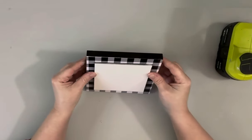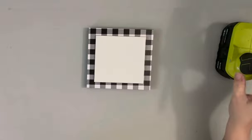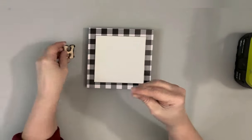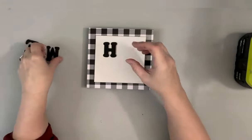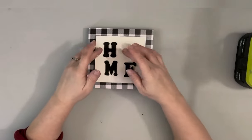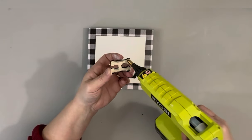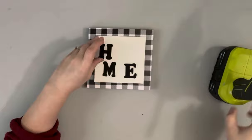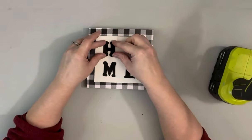Then I took my letters and placed them down. These letters had little stickers on them, so I just pulled them off. Then I placed them down and hot glued them once I had them set where I wanted them.